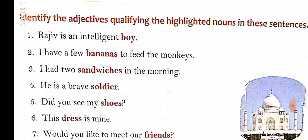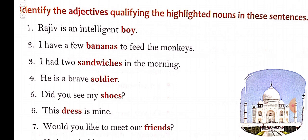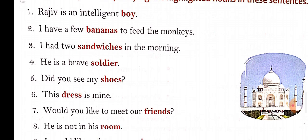Now let's do some practice. Identify adjectives that qualify the highlighted noun in these sentences. First: Rajiv is an intelligent boy — the type of adjective is quality, because Rajiv is intelligent. Second: I have a few bananas to feed the monkeys — adjective of quantity. Third: I had two sandwiches in the morning — adjective of number. Fourth: Here is a brave soldier — adjective of quality.